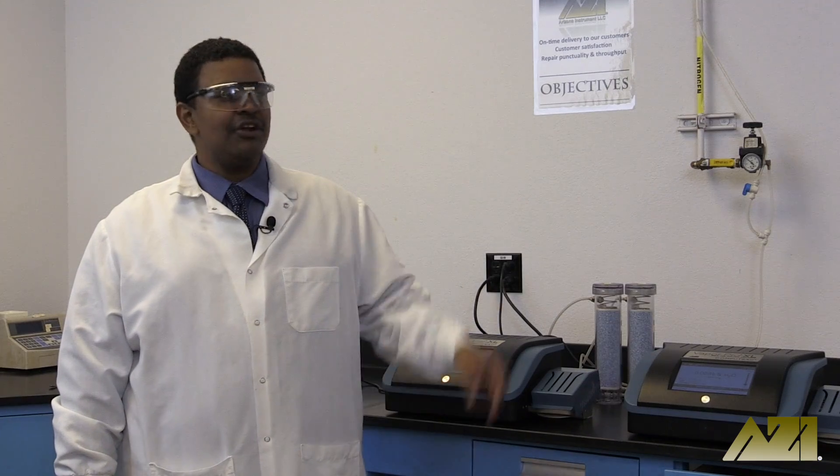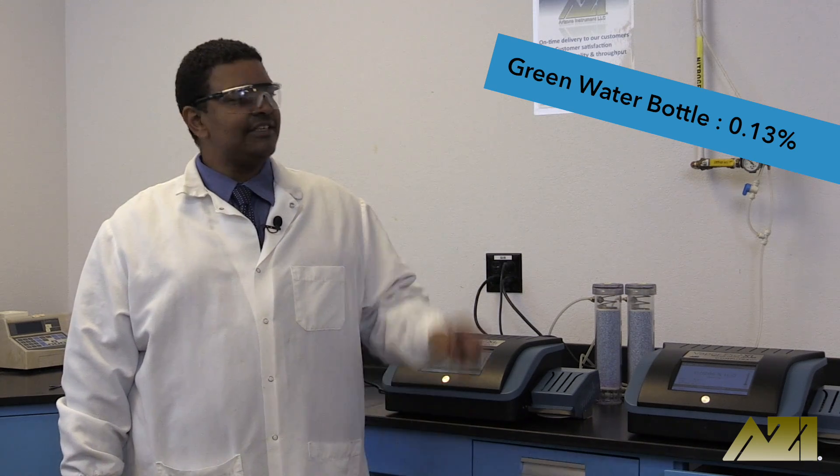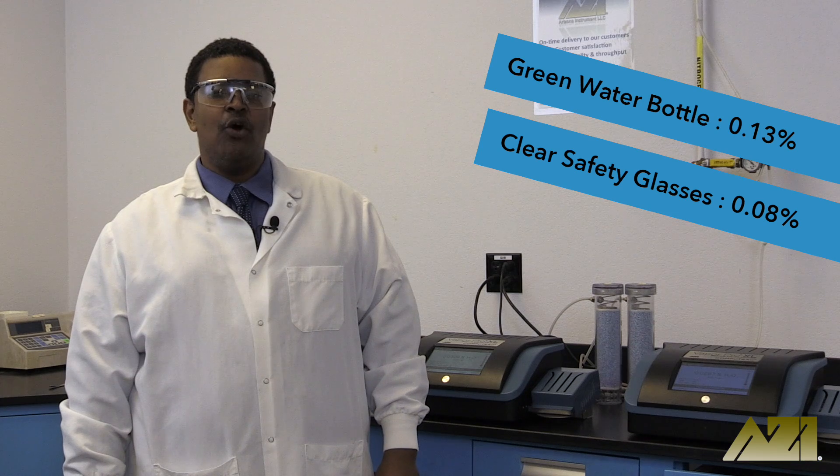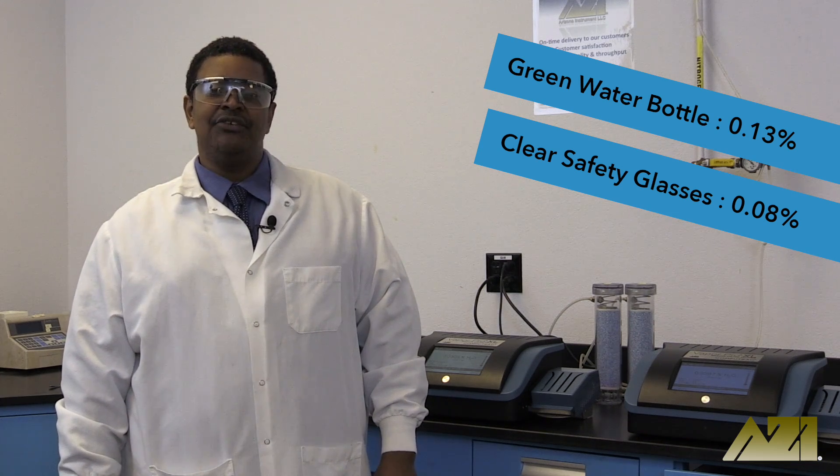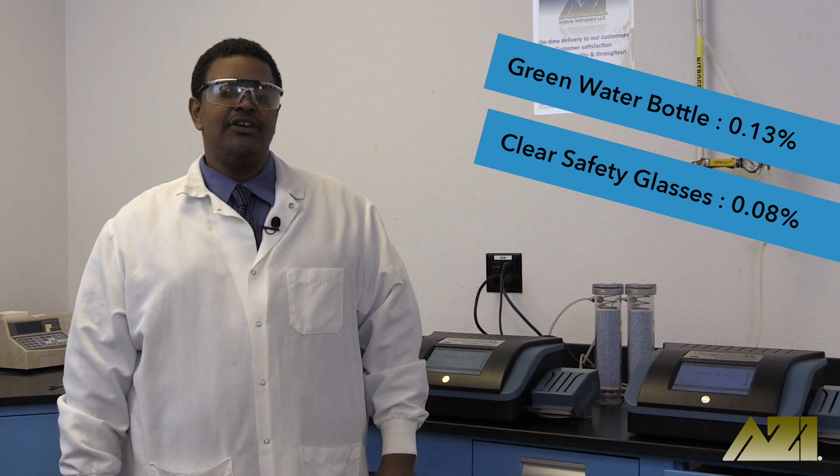At 0.13% moisture, the green water bottle has about 60% more moisture than the clear safety glasses, which came in at approximately 0.08%. This is most likely due to the addition of a green colorant to the water bottle.